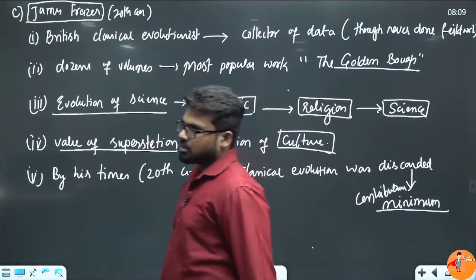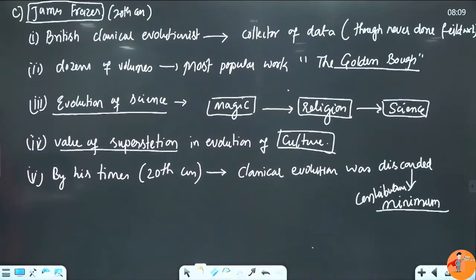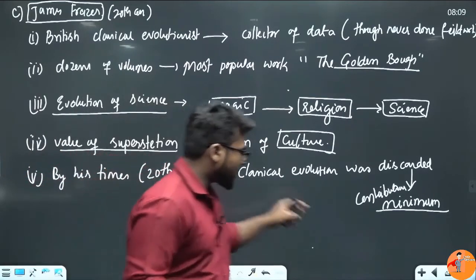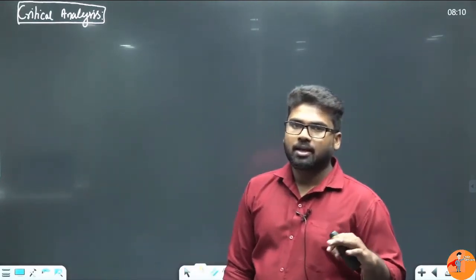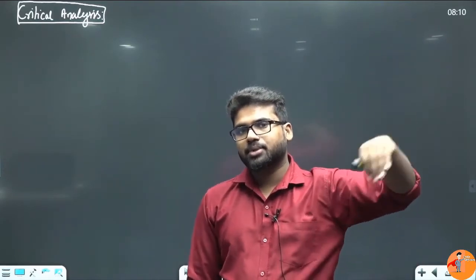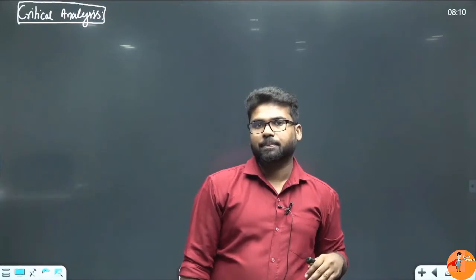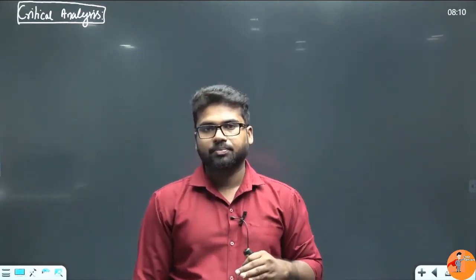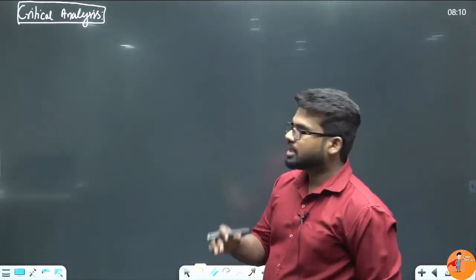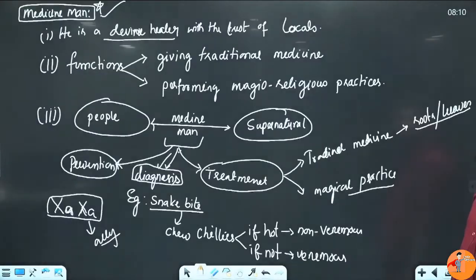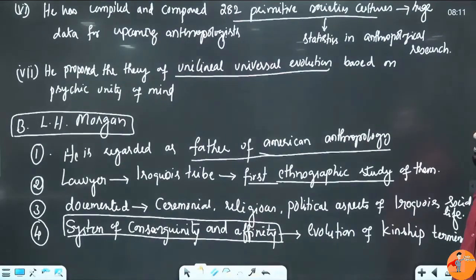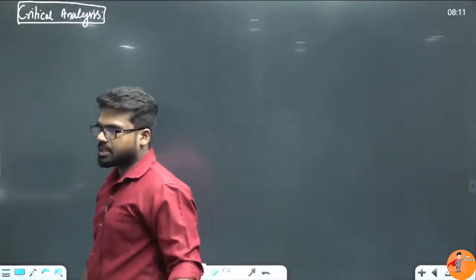These are all the contributions done by various evolutionists. Now we will do their critical analysis. Those who are taking the recorded sessions or live format, when you revise, try to link the examples with whatever topics we have covered from 2.1 to 5. These people's work has been cited. Bring those and appropriately add to these points. Now, critical analysis of the classical evolutionists. Please tell me, what are the critical points of this classical evolutionist?